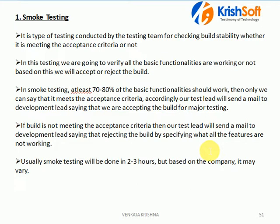Smoke testing is the first one we are going to perform on any build or any application from the development team. In smoke testing, this type of testing is used for checking the build stability — whether that build is stable or not, and whether we are able to continue with our testing on that build. Finally, at the end of smoke testing we can find out whether to accept that build or not for further testing.